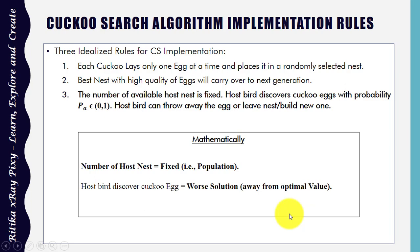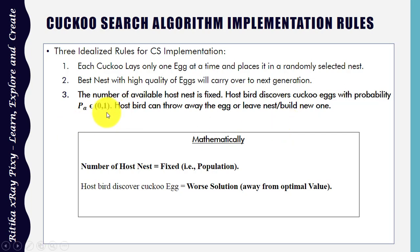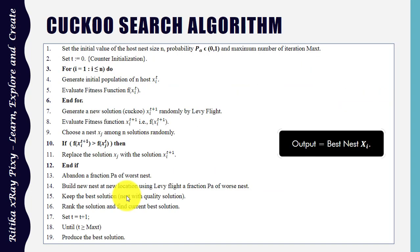Third rule: the number of host nests is fixed — that is the population — and once the egg is discovered by the host bird, it can either kill the egg or build a new nest. The probability is zero to one. The host bird discovers cuckoo eggs that represent the worst solutions away from the optimal value.